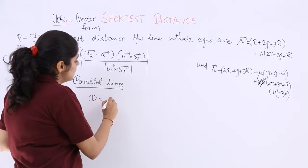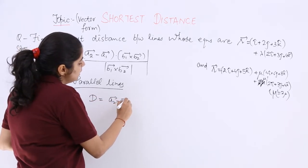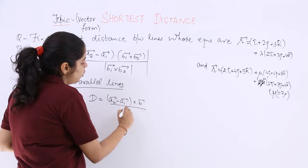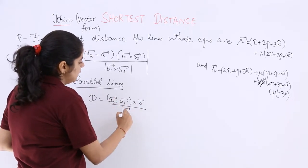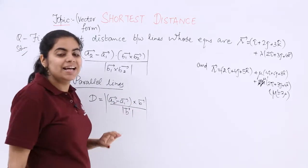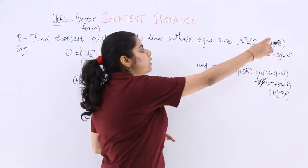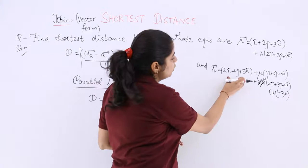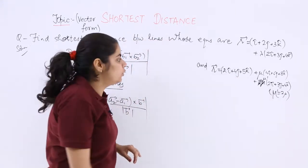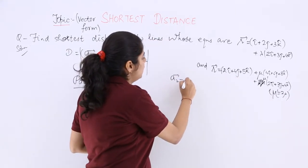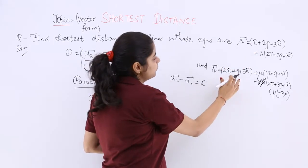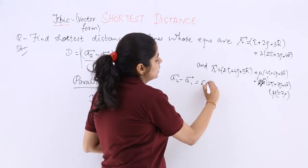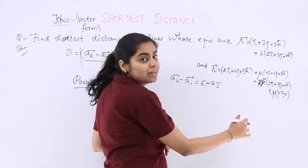So the distance now is equal to (A2-A1) cross B whole over mod B, or I can write it like this. Now what you have to do? This is your A1, this is your A2. First find out A2-A1. A2-A1 is what? 2i-i is i cap, 4j plus 2j, 5 and 3 makes it plus 2k.